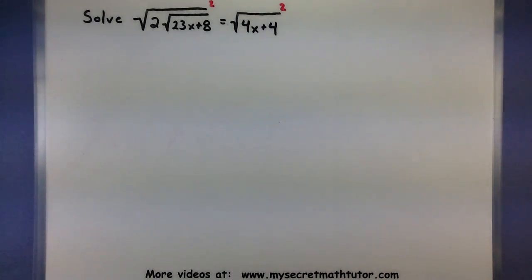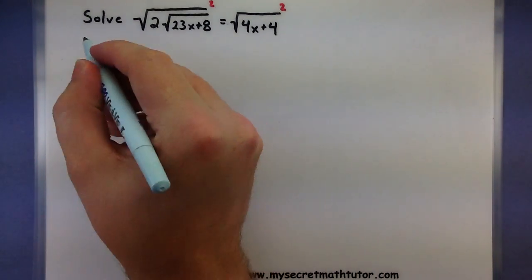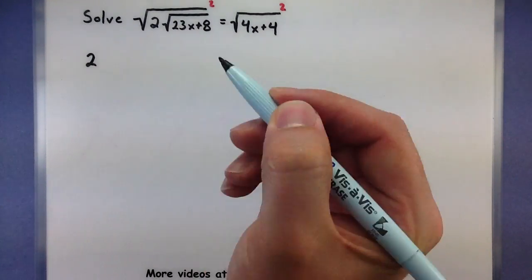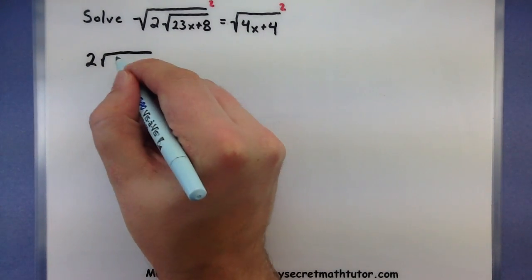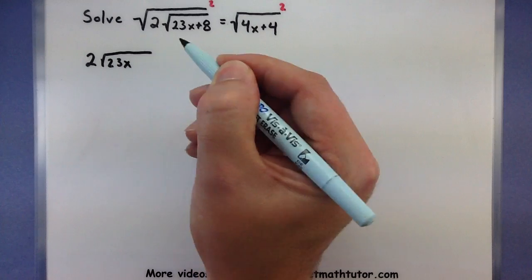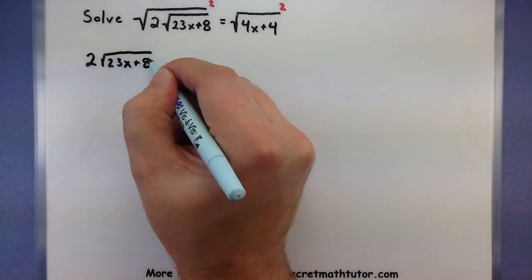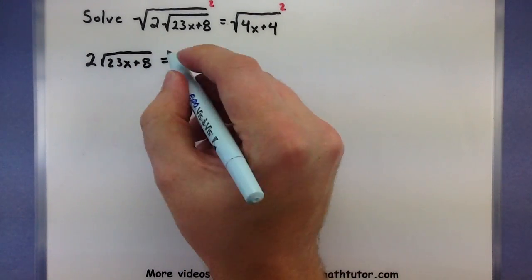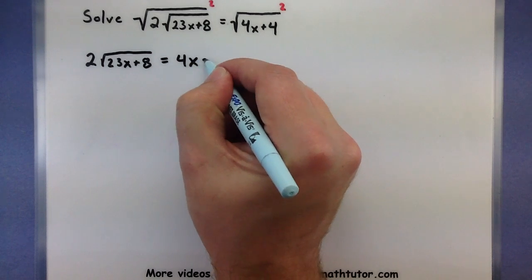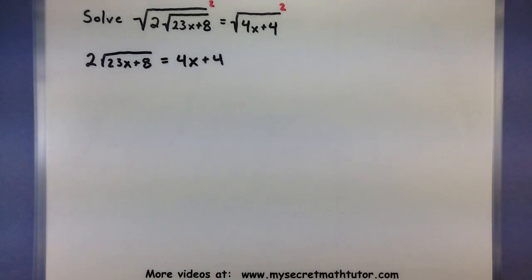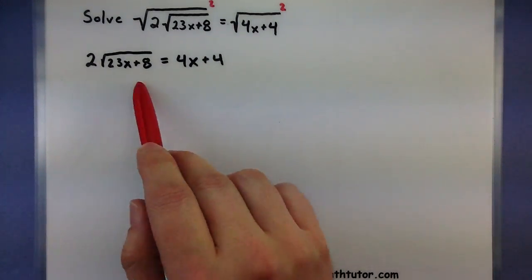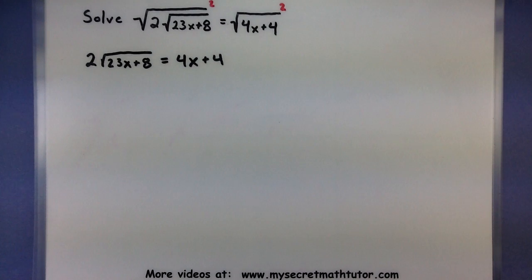This will make things a lot nicer for us. So it'll remove one of our roots, so 2 times the square root of 23x plus 8 equals 4x plus 4. Now we really only have one more root to deal with, and it's pretty much isolated on one side. So again, we'll square both sides right now and get rid of that one as well.